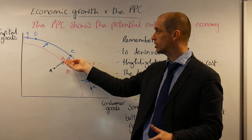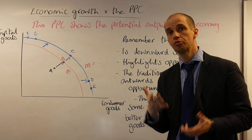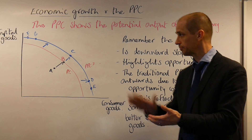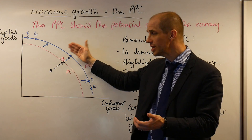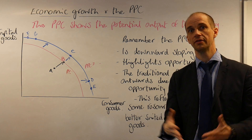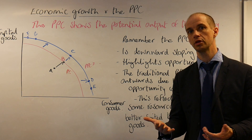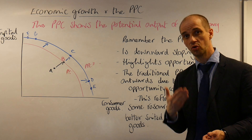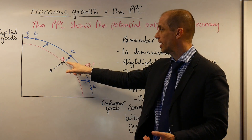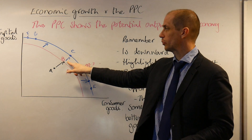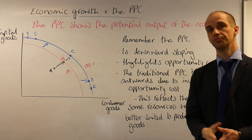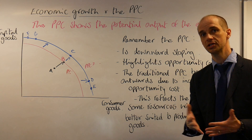To generate longer-term improvements in the trend rate of economic growth, you need to generate large shifts in the productive capacity of the economy — improvements in aggregate supply. That would enable the economy to move from point B to point C.